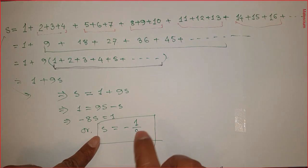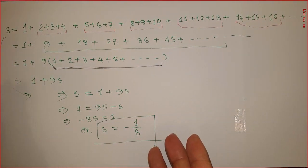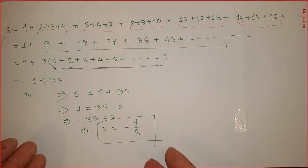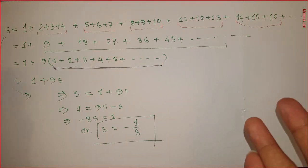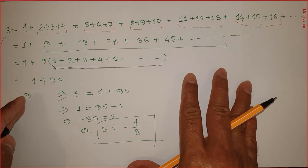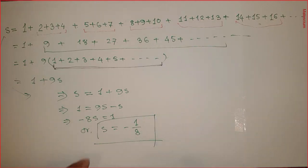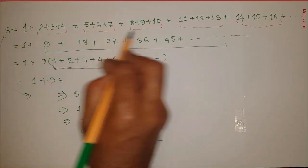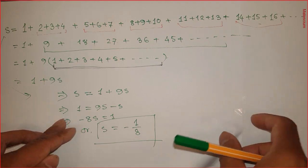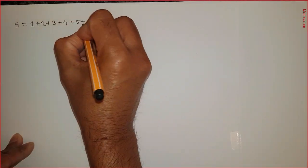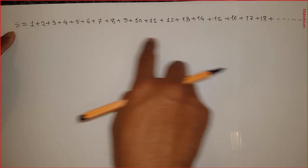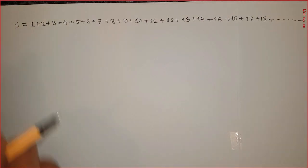Seems like something is wrong here, right? If you know what exactly is wrong, you can write it in the comment section. Of course, this is not the only method — I have another method to prove that this series equals minus 1 over 8. Let's see how I prove it using another method.